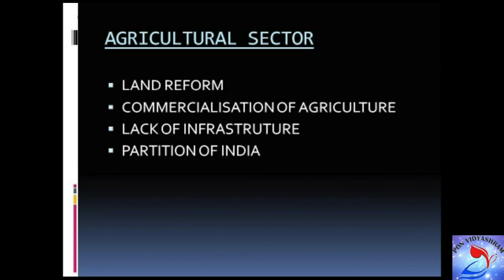They introduced the zamindari system in India. Under this system, a triangular relationship was established among the government, the owner of the soil, and the tiller of the soil. The zamindars were considered the permanent owners of the soil. They had to pay a fixed sum to the government and were completely free to appropriate as much as they could from the tillers of the soil.